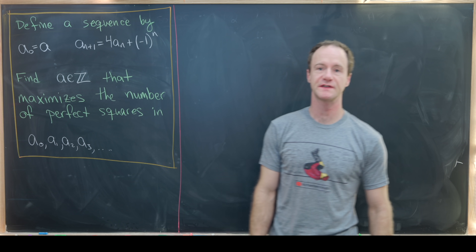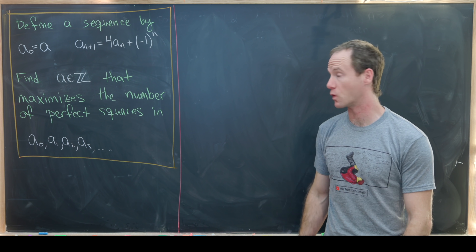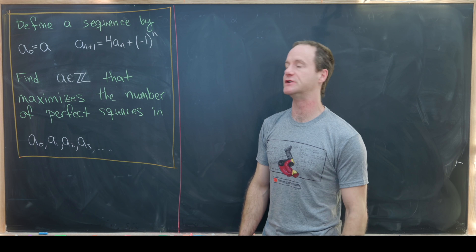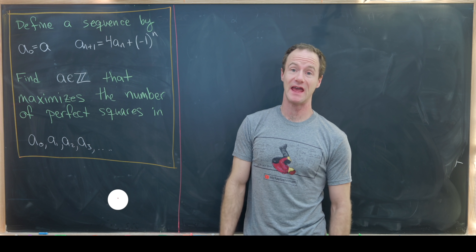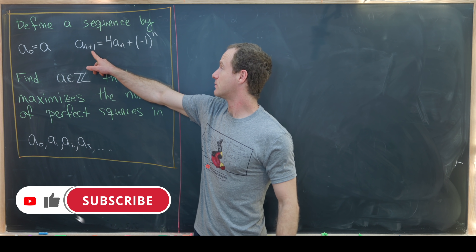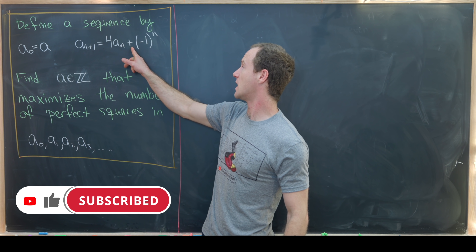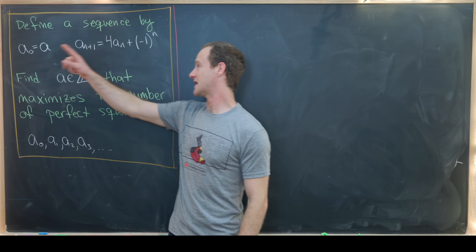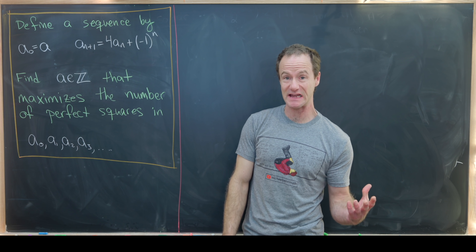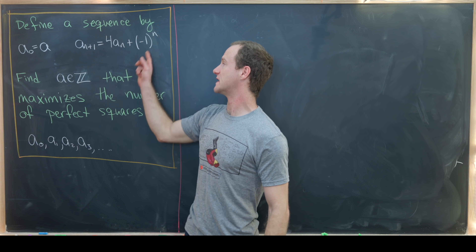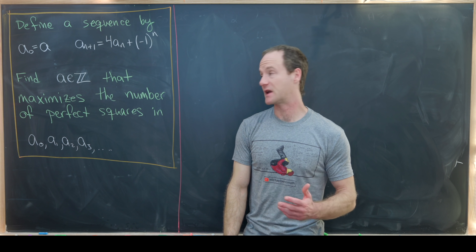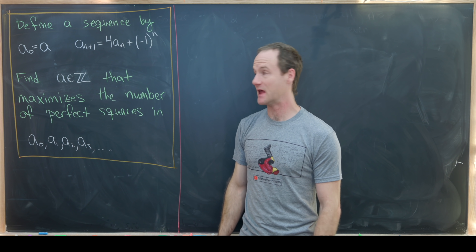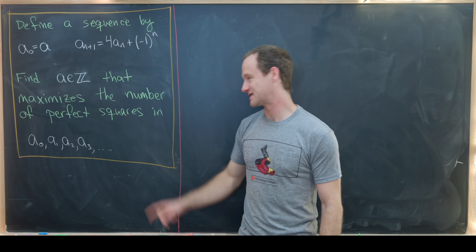Here I've got a nice problem involving a recursively defined sequence and perfect squares. We want to define the following sequence recursively: a_0 will be equal to a, which is an integer, and then a_{n+1} will be 4 times a_n plus (-1)^n, for all n ≥ 0. Our goal is to find all integers a that maximize the number of perfect squares in this list.